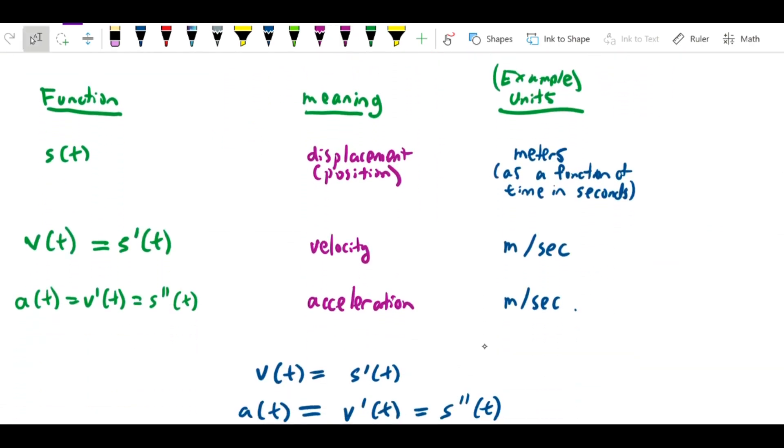So that gives you some sense of why the instantaneous velocity is the derivative. Let me put up what the true relationship is between functions for motion problems. We have the function s(t) which gives displacement - let's measure it in meters as a function of time in seconds. There's no reason we can't measure it in other units.